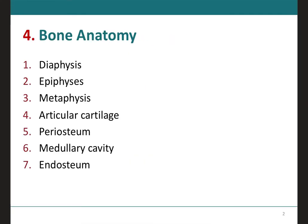With regards to bone anatomy, there are several parts of the bone that we will discuss. Some of them we have already talked about. For example, diaphysis and epiphysis we talked about in previous slides, as well as articular cartilage, periosteum, endosteum, and medullary cavity. The metaphysis is something that we have not talked about, but we will discuss it in this learning outcome.